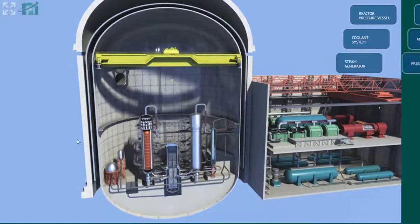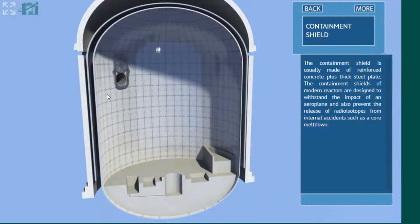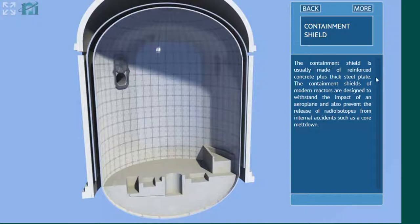This is my subject. So we see here containment. The explanation says that it's usually made of reinforced concrete and plastic steel plate. Actually, it's not very precise. It's not reinforced concrete. Even if reinforced concrete in a broad sense also applies to pre-stress, it's precisely pre-stressed concrete.